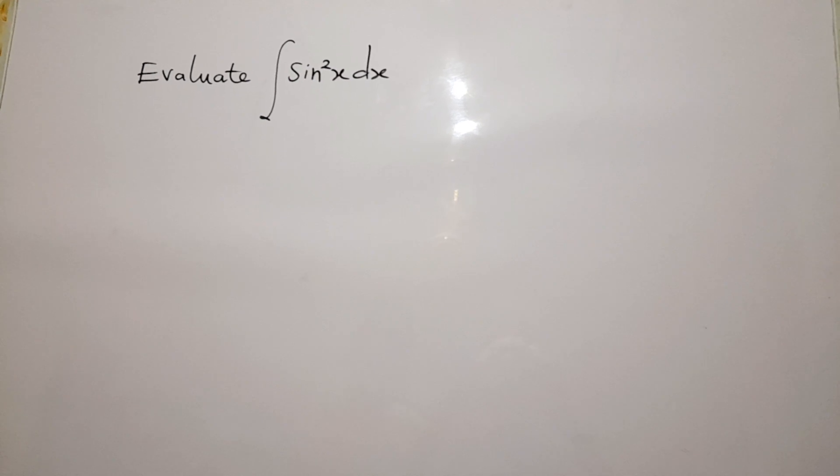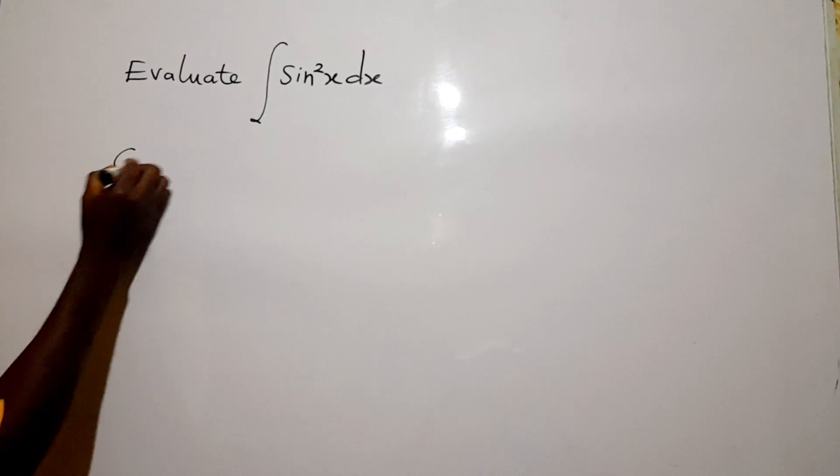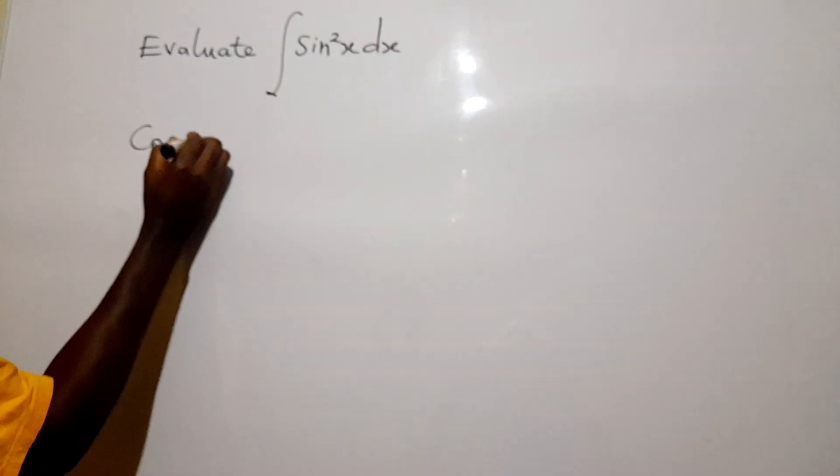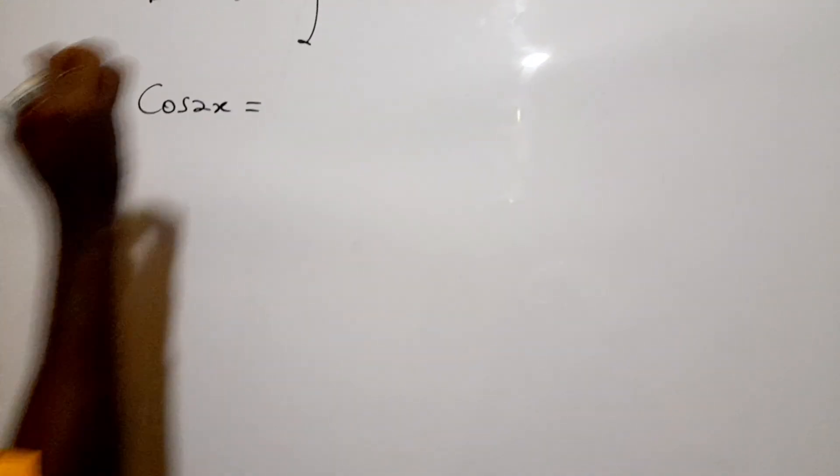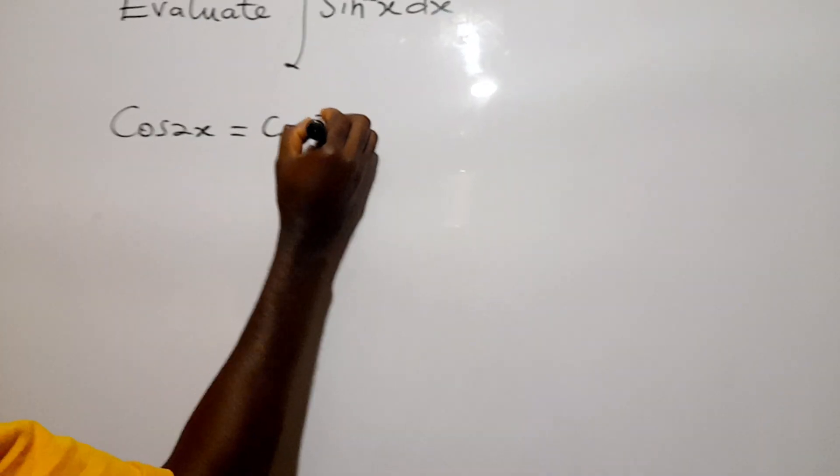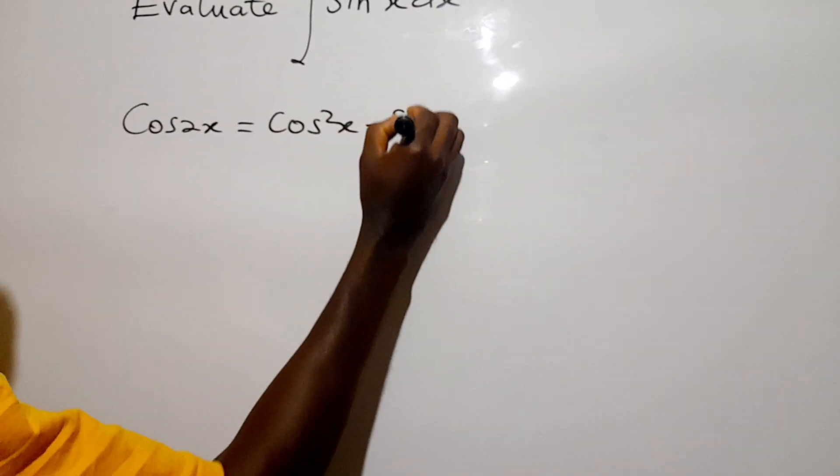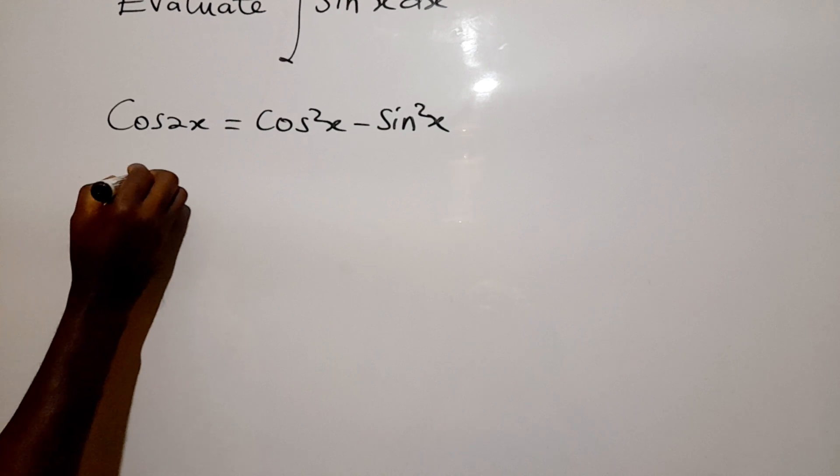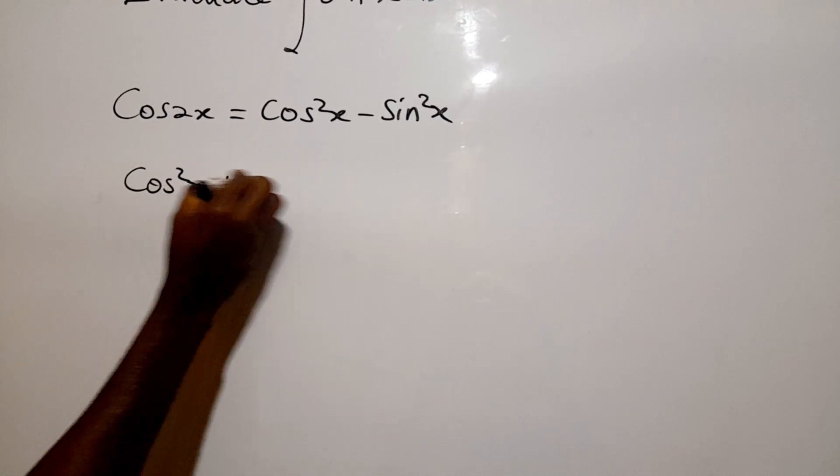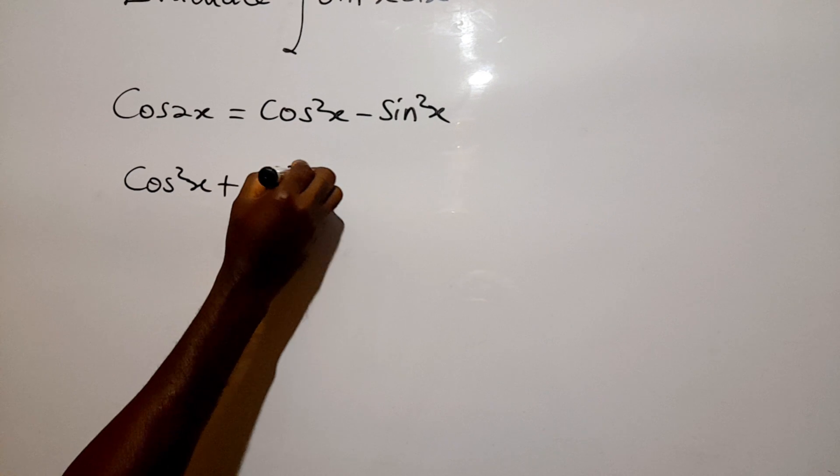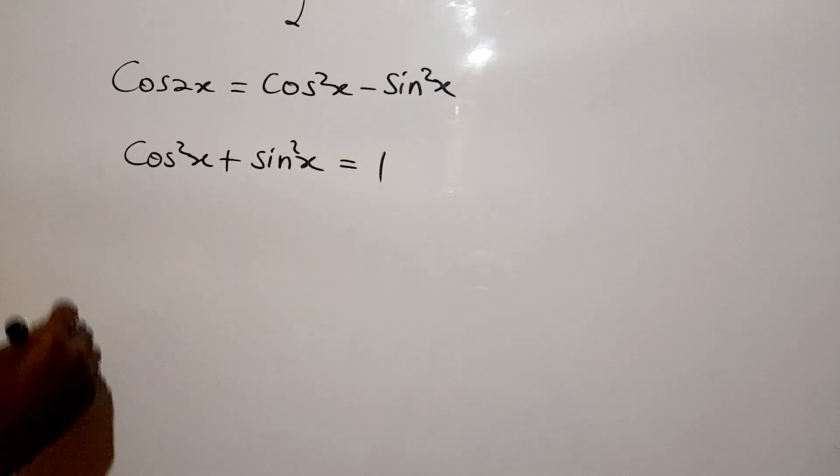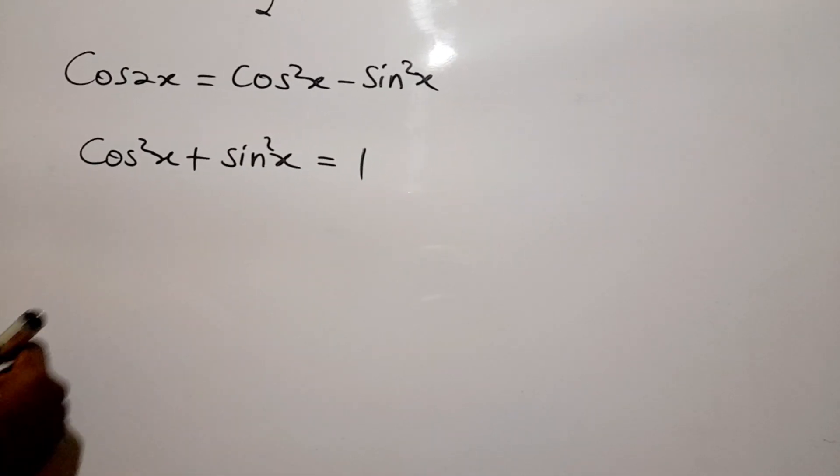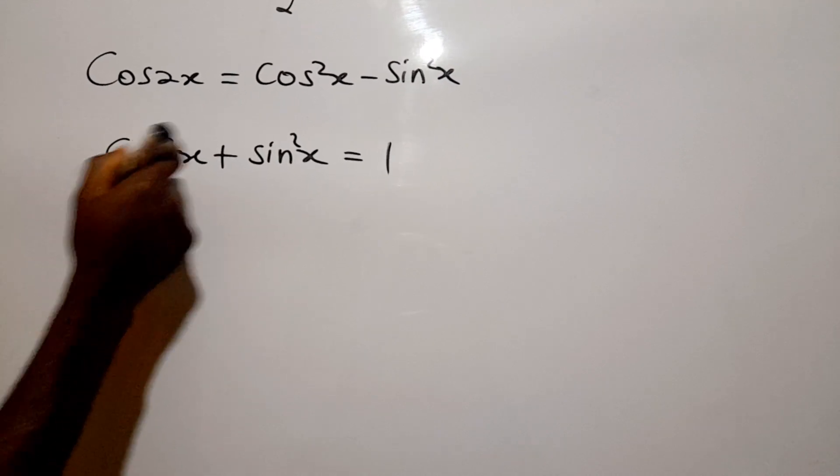So remember from double angles, cos 2x can be cos squared x minus sine squared x. This is gotten from compound angles. And also you can say cos squared x plus sine squared x is equal to one.